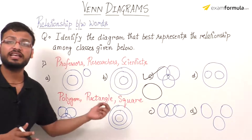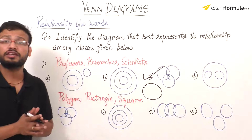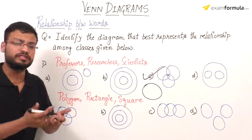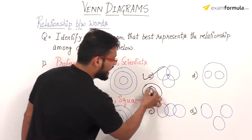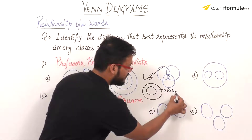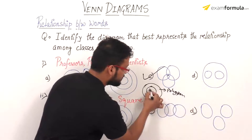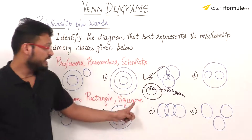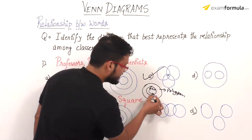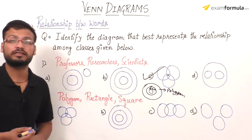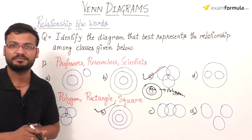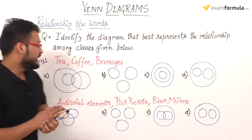Next, I need to find the relationship between rectangle and square. I know that all squares are rectangles, so squares are a part of rectangles. Therefore, rectangle is a part of polygon — polygon is the largest circle, rectangle is the next circle inside it, and square is the smallest circle inside rectangle. So the correct option for these three words will be option B, which will be your final answer.